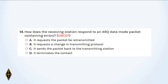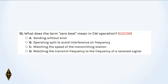And fourteen: How does the receiving station respond to an ARQ data mode packet containing errors? And fifteen: What does the term zero beat mean in CW operation?